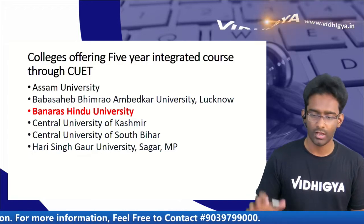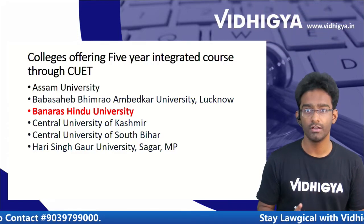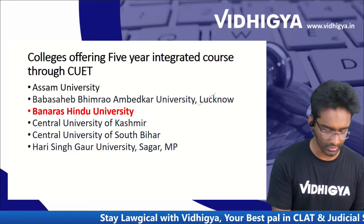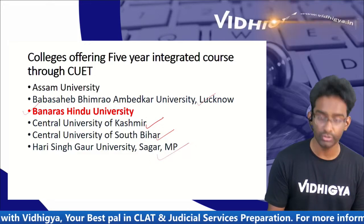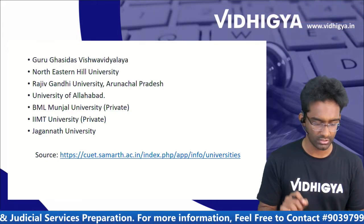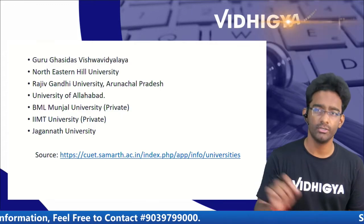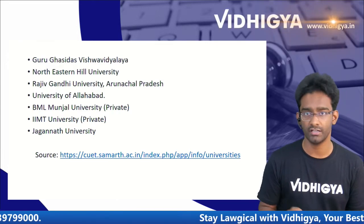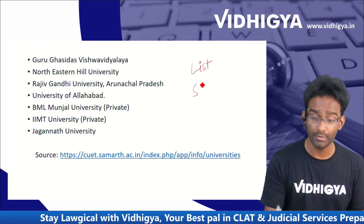The central universities that participate in CUET and offer the 5-year integrated law course include: Assam University, Bhimrao Ambedkar University, Banaras Hindu University, Central University of Kashmir, Central University of South Bihar, Hari Singh Gaur University (Sagar, Madhya Pradesh), Guru Ghasidas Vishwavidyalaya, Northeastern Hill University (Shillong), Rajiv Gandhi University (Arunachal Pradesh), University of Allahabad. Private universities like BML Munjal University, IIMT University, and Jagannath University also admit on CUET score basis.